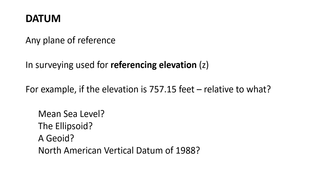We talked about this when we did leveling last week — you calculated from a benchmark. You knew what the elevation of the benchmark was at the light pole, and then you calculated what the elevation was at your instrument, your HI — height of instrument. In some ways you've now calculated a datum, a reference elevation that ran through the center of the optics of your auto level.